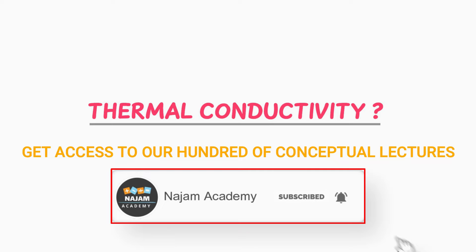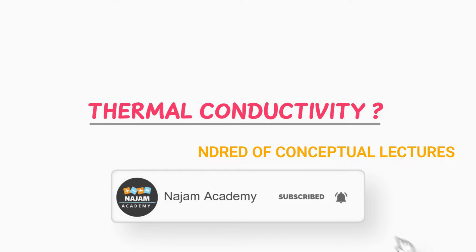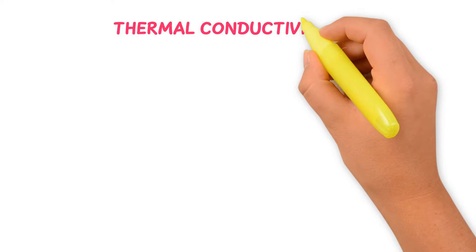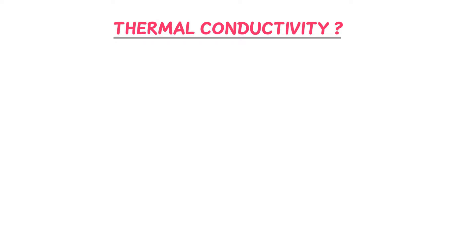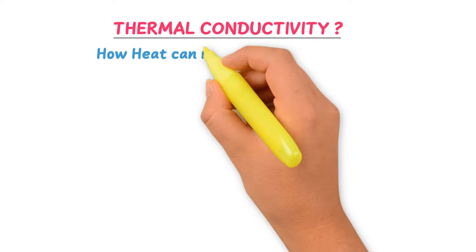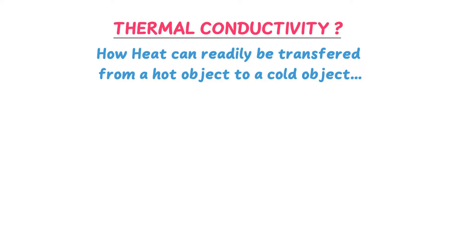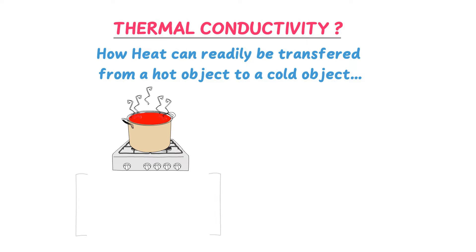In the previous video we learned all about heat transfer. Now, what is thermal conductivity? The most easy definition of thermal conductivity is how heat can readily be transferred from a hot object to a cold object. For example, during cooking a metallic pot absorbs heat from the flames and transfers it to the food or vegetables.